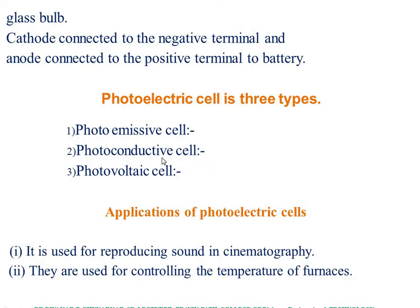In the photoconductive cell, when light falls on the cell, its resistance decreases to increase the conductivity. This type of cell is known as a photoconductive cell. In the photovoltaic cell, light energy falling on it is directly converted into electrical energy. It does not require an external battery supply — keep this in mind, students. There is only internal battery supply.